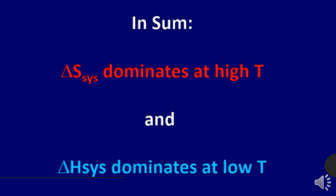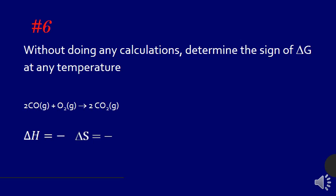So, in sum, entropy dominates at high temperatures. Enthalpy dominates at low temperatures. This one's the tricky one. Determining the sign of G at any temperature. Because we know entropy depends on temperature.